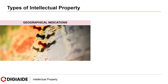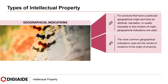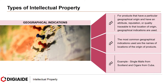Next, Geographical Indications. For products that have a particular geographical origin and have an attribute, reputation or quality traceable to that location of origin, geographical indications are used. The most common geographical indications used are the names of locations of the origin of the products. Examples include Single Malts from Scotland and Cigars from Cuba.